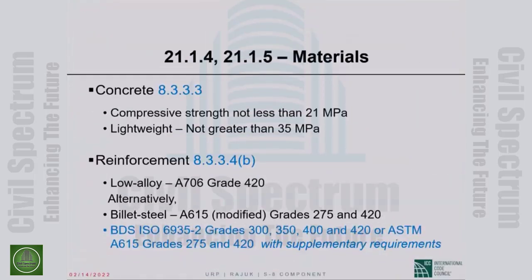Material restrictions for special shear walls are the same as for special moment frames. For normal weight concrete, there is no upper limit on compressive strength, but it cannot be lower than 21 MPa (3000 psi). For lightweight concrete, there is an upper limit of 35 MPa, because insufficient test results demonstrate that hysteretic load-deflection behavior of lightweight concrete members is comparable to similar normal weight concrete members.